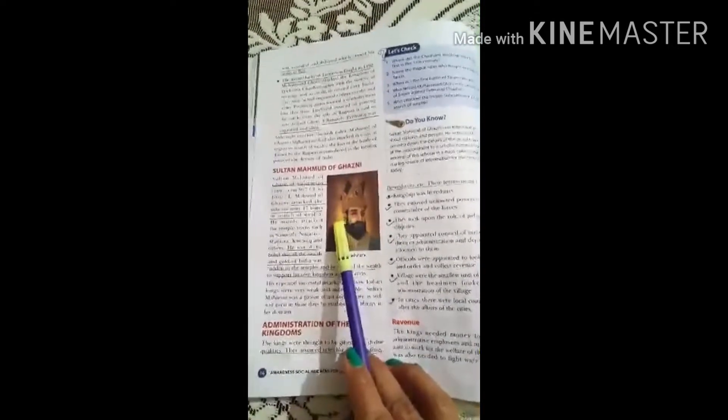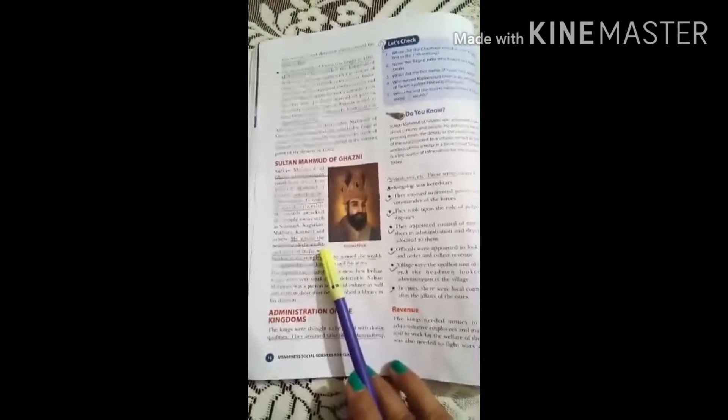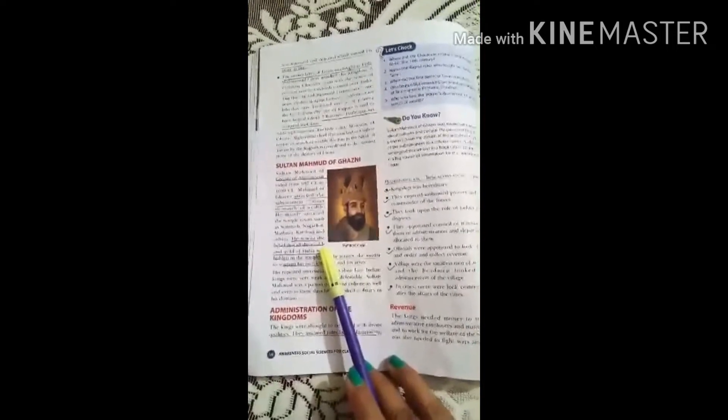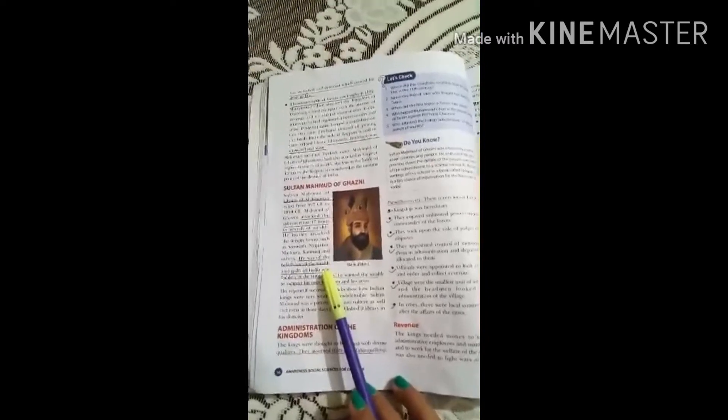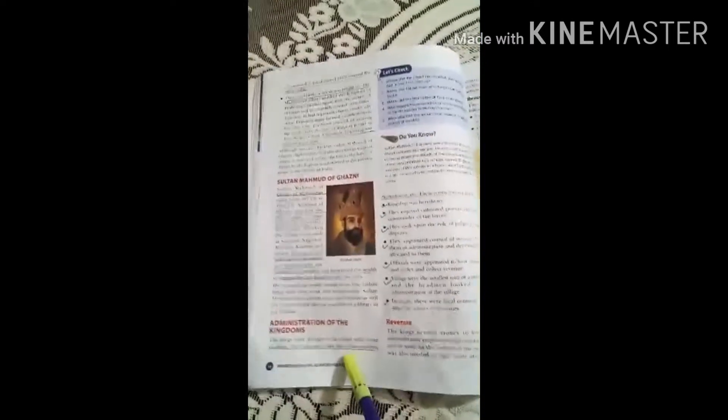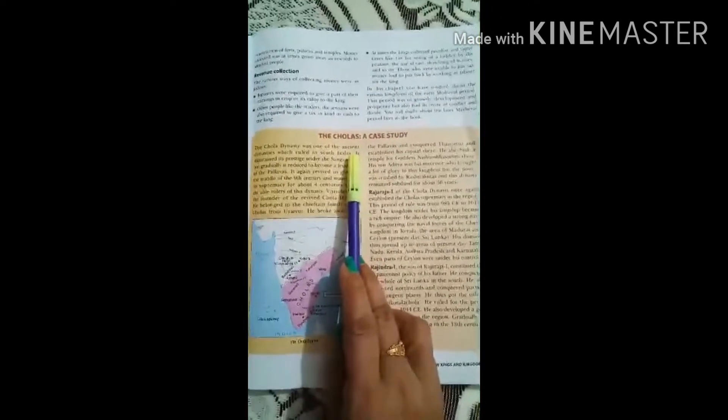We studied about Mahmood Ghazni, who invaded India, attacked India 17 times and looted Indian rich temples. Administration of these kingdoms, revenue system. Now today we are going to start with Chola dynasty, which was a very important dynasty of this time.